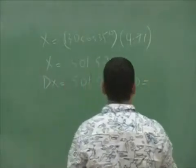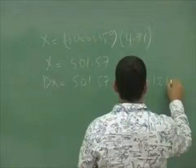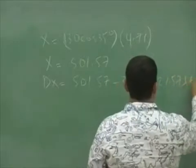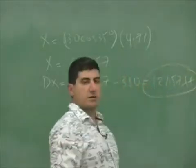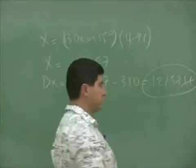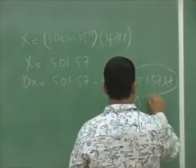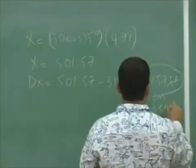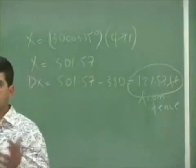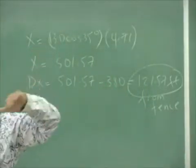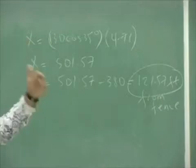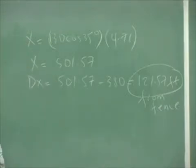And that will be 121.57 feet from fence. That's assuming there are no bleachers or whatever. If it just goes over the fence and hits the ground, it'll hit the ground 120 feet farther than the fence.